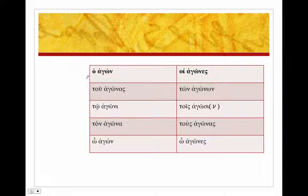Agon, contest: ho agon, tu agonos. We see the stem is going to be agon. Notice it's a circumflex accent here. Remember, accents on nouns are persistent - it will stay on this omega as much as it can, and it will shift. Here it's acute, circumflex here because this is a short vowel.